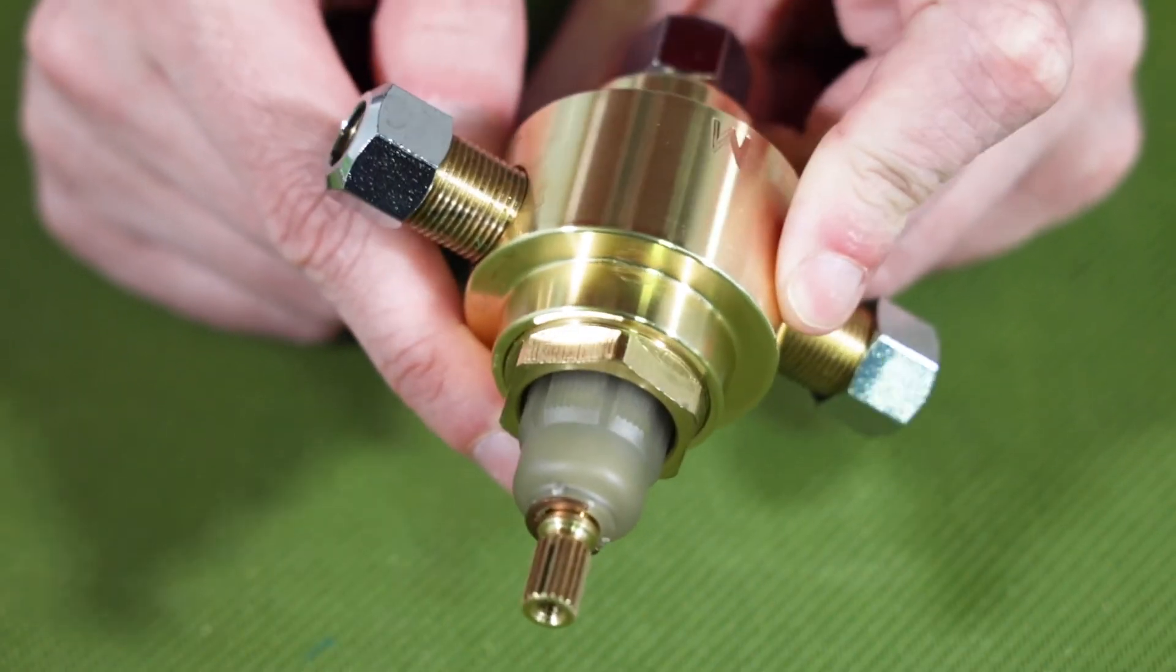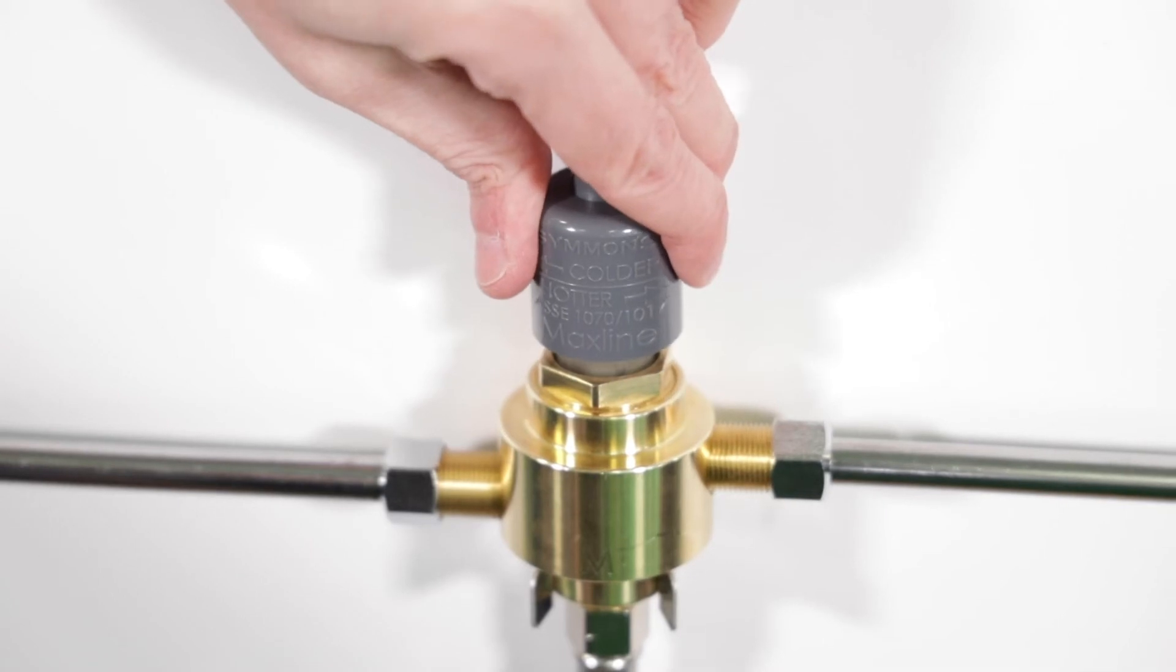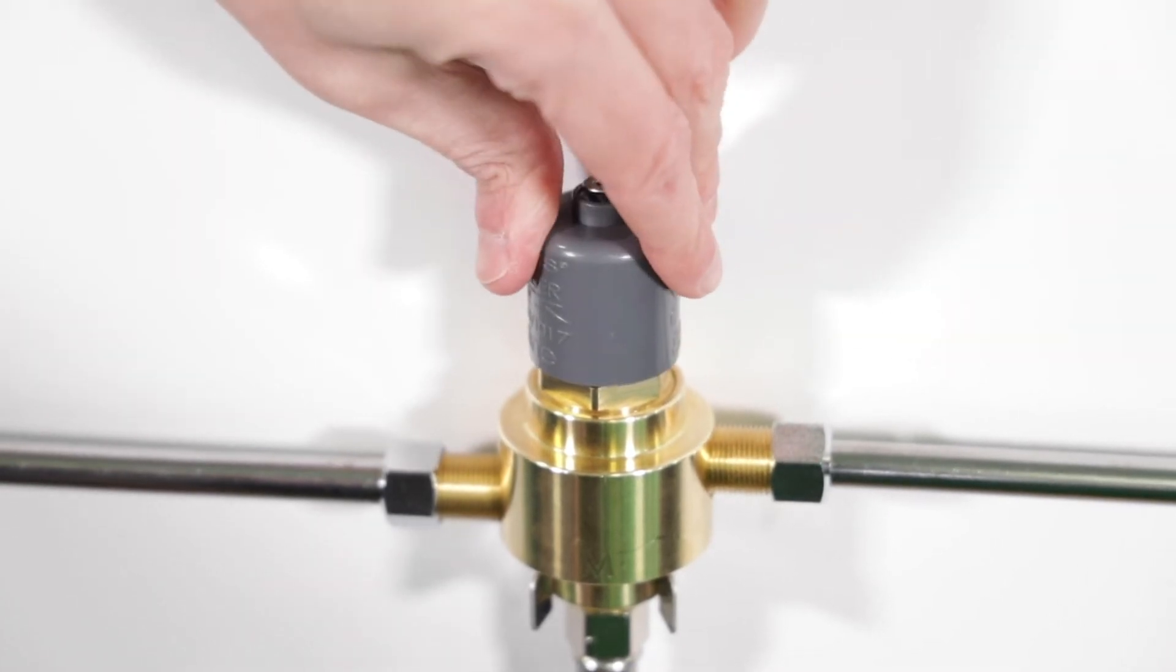However, the cap has a knurled ring on the inside that acts as a lock to prevent tampering, so lift it up slightly out of the locking ring to allow it to spin.